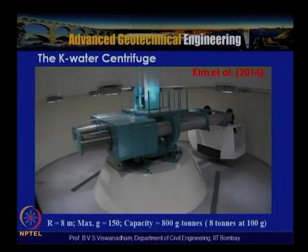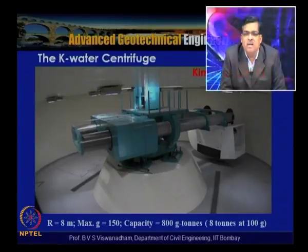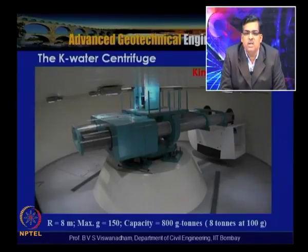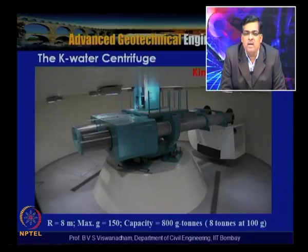The K-water centrifuge has a radius of about 8 meters and is a beam centrifuge with a single basket area of approximately 2 m × 2 m. Its maximum g-level is 150 and capacity is 800 g·tons, meaning it can carry a payload of about 8 tons at 100g — enabling very large centrifuge models. This centrifuge was developed for studying problems such as dam instabilities, levee instabilities, and other water-related structures.